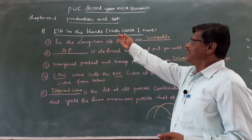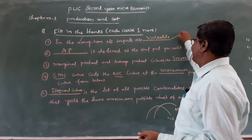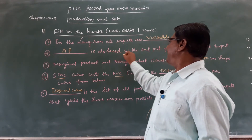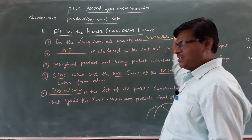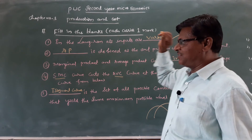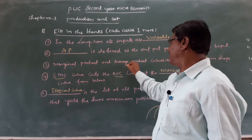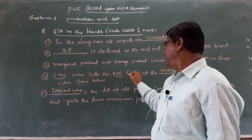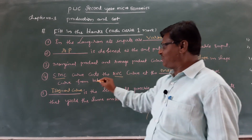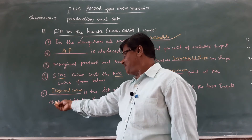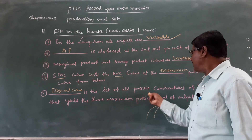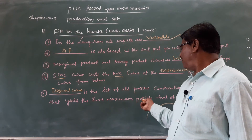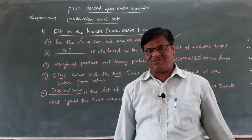Once again, recap of all answers: 1) In the long run, all inputs are variable. 2) AP is defined as the output per unit of variable input. 3) Marginal product and average product curves are inverse U-shaped. 4) SMC curve cuts the AVC curve at the minimum point of AVC curve, from below. 5) Iso-quant curve is the set of all possible combinations of two inputs that yield the same maximum possible level of output.